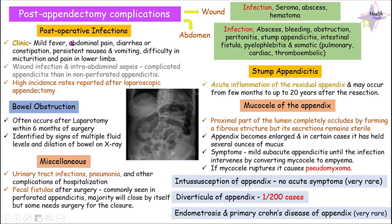Let's move on to postoperative infections. Postoperative infections means infections that occur after operation. The most common symptoms that these patients might have include mild fever, abdominal pain, diarrhea or even constipation, persistent nausea and vomiting. They often suffer from difficulty in micturition and also pain in the lower extremities. We can see wound infections and intra-abdominal sepsis most commonly in case of complicated appendicitis, also known as perforated appendicitis.